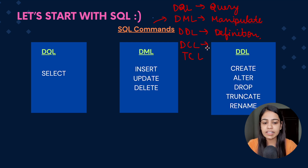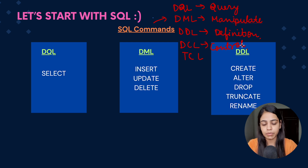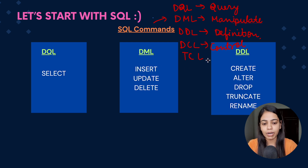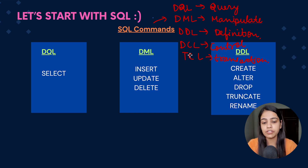The fourth one is DCL command, that is Data Control Language command. In Data Control Language command we set some controls on our database, so in that case DCL command is used. The fifth one is TCL command, that is Transaction Control command — so whenever we are doing some transaction and we need some control on that transaction, we use this TCL command.